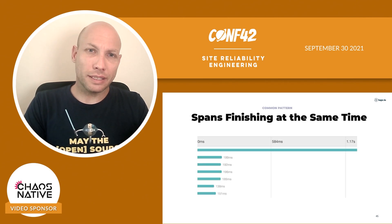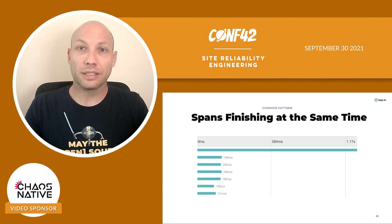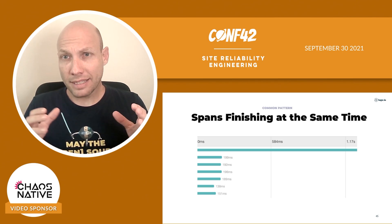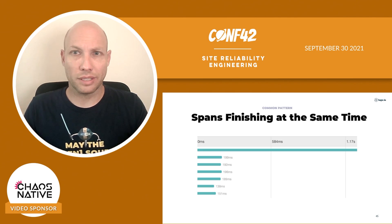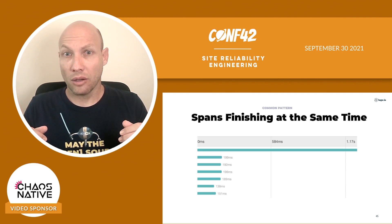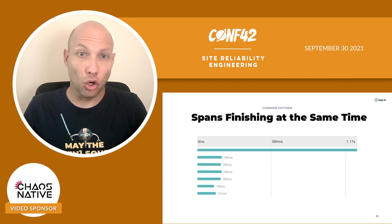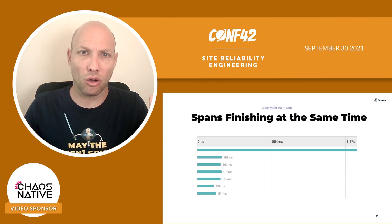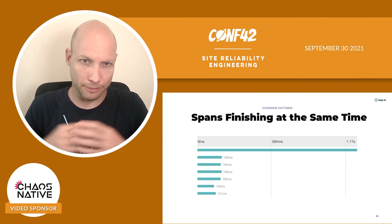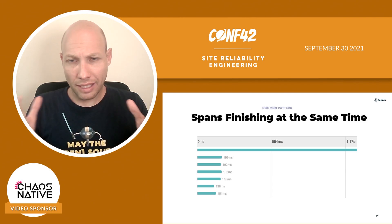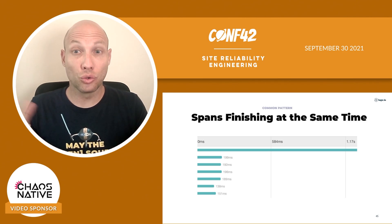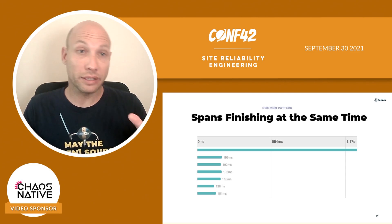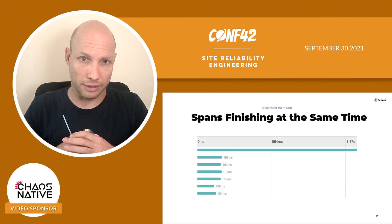The next pattern is spans finishing at the same time. This may indicate a connectivity issue causing timeouts or errors, or some other artificial constraint — like locking issues, where several requests are waiting on a specific lock, and once the lock is released, all of them finish quickly. In this case, you may want to tune the timeout parameter or investigate why things are taking longer than expected.